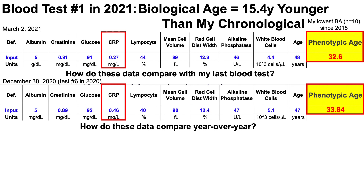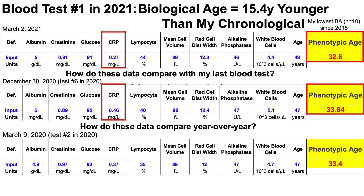How did these data compare year over year? I also measured in March of 2020, and there may be seasonal effects to some of these data. This is the second blood test I did in 2020 in March, compared against the blood test I just did on Tuesday. My phenotypic age was 33.4 years in March 2020. Even though my chronological age went up by one year, my biological age was reduced by 0.8 years — heading in the right direction. Also note that my C-reactive protein in that measurement was 0.37 milligrams per liter, whereas I was able to reduce it by about 30% for this most recent blood test.